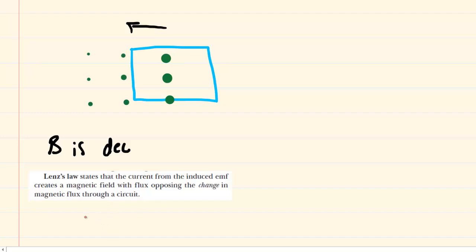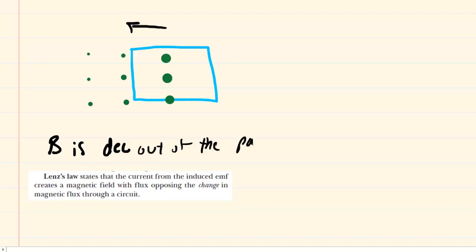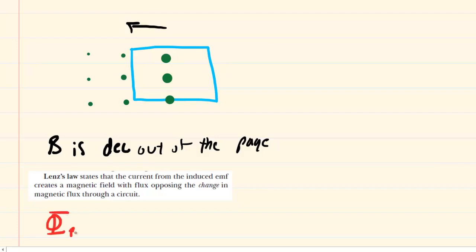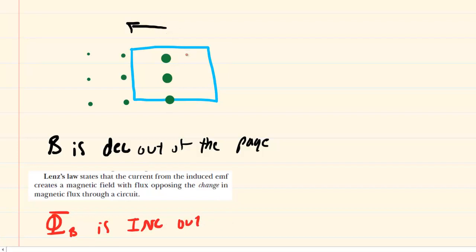To predict the direction of the current, we must obey Lenz's law, which states that the current from the induced EMF will create a magnetic field with flux opposing the change in flux through the circuit. For loop B, the magnetic field is decreasing and directed out of the page. We therefore need to create a magnetic flux that is increasing out of the page to obey Lenz's law. To do that, we need to induce a magnetic field pointing out of the page.